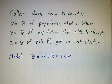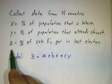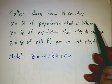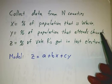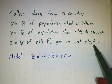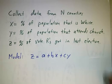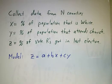We call these x, y, and z — just the fraction white, fraction churchgoing, and fraction that vote Republican. That's a reasonable model, and political scientists have been making lots of money by trying to fit data to it.